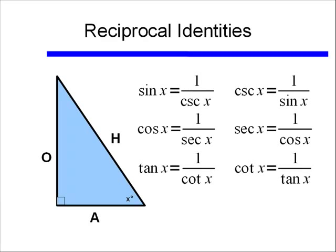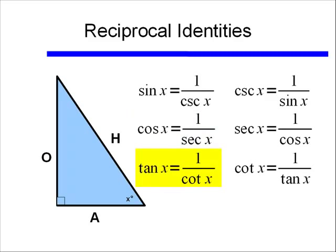We talked about the relationship between sine and cosecant, cosine and secant, and tangent and cotangent as reciprocals. Now we'll call these our reciprocal identities. For any value of X: sine X equals 1 over cosecant X, cosine X equals 1 over secant X, and tangent X equals 1 over cotangent X. Similarly, cosecant X equals 1 over sine X, secant X equals 1 over cosine X, and cotangent X equals 1 over tangent X.